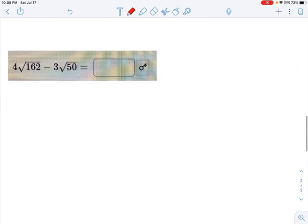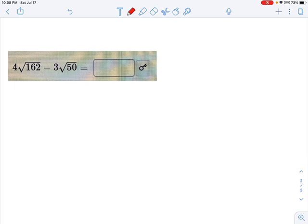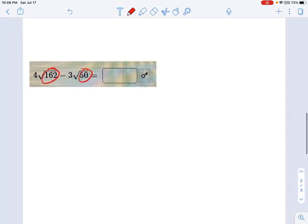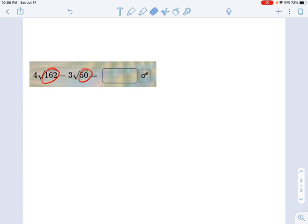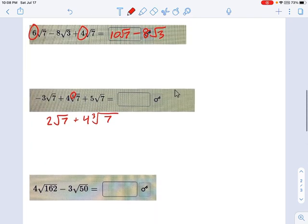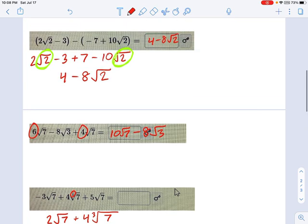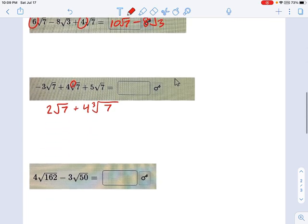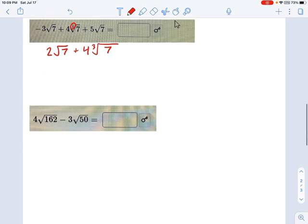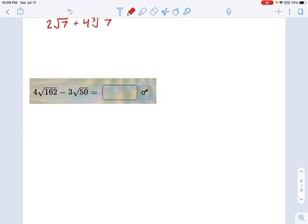Last one on the list. It might look at first like we don't have like terms here. 162 and 50 don't seem very similar to me. But I want you to get in the habit of always simplifying down to prime numbers inside radicals if you can. See all these other ones? Root 7's, root 3's, root 2's. Those were all prime numbers, so I did not delay us on that point. But for this one we have to be careful.